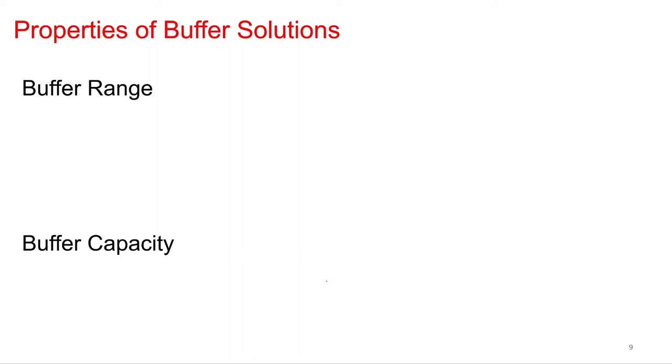Alright, so the last thing we need to talk about for buffers are just two terms, two terminologies that we use when you're talking about buffers. And they pretty much just go to describe how well the buffer would work in certain situations. And they are buffer range and, wait for it, buffer capacity. Yep, that's the second one we're going to talk about.